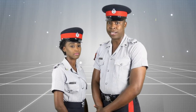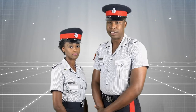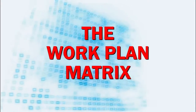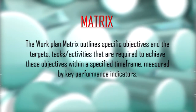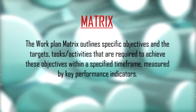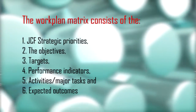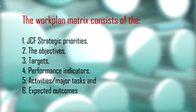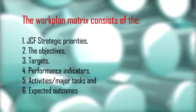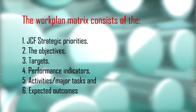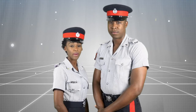Now let us take a look at the main content of the Policing Work Plan. The Work Plan Matrix outlines specific objectives and the targets, tasks, or activities required to achieve these objectives within a specified timeframe, measured by key performance indicators. The Work Plan Matrix consists of: 1. JCS Strategic Priorities, 2. Objectives, 3. Targets, 4. Performance Indicators, 5. Activities or Major Tasks, and 6. Expected Outcomes.